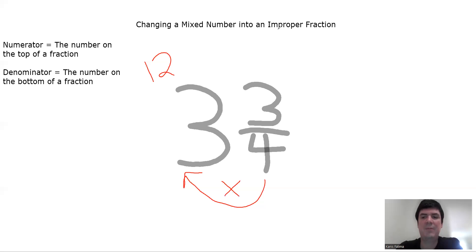My next step is I'm going to take that number, 12, and I'm going to add it to my numerator, 3. So, I get 12 plus 3. Now, when I add 12 plus 3, that becomes my new numerator.